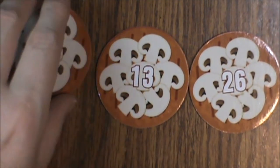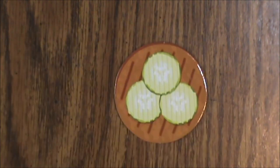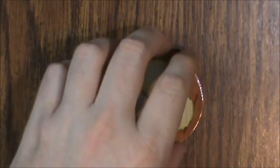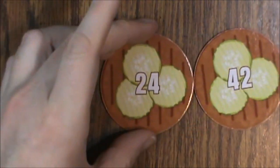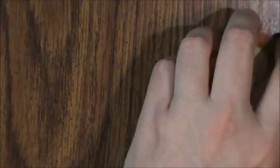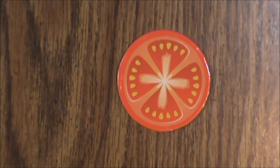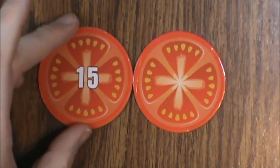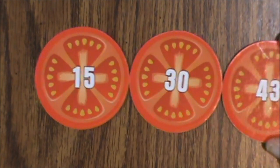Next up we have three with pickles on them: number 42, number 24, and number 8. Now we get into our toppings. We've got three tomatoes. Those are number 15, number 30, and number 43.